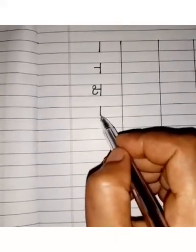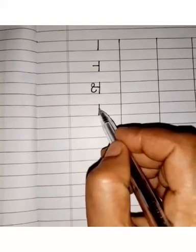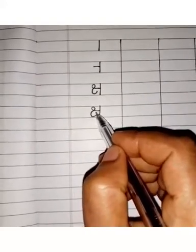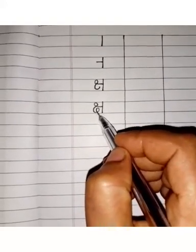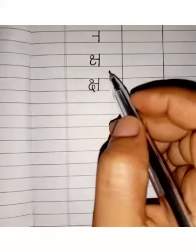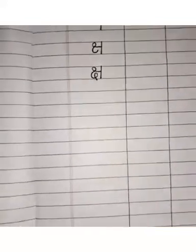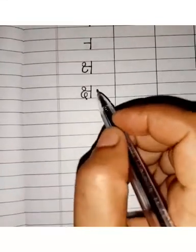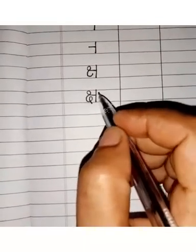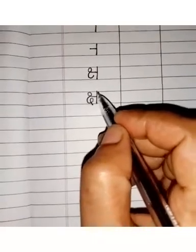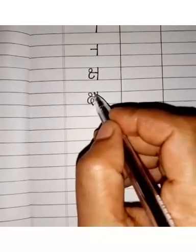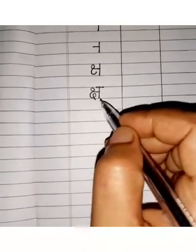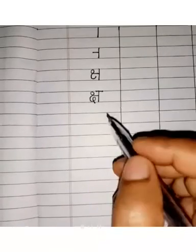After that, you have to write like this. And then you have to draw a slipping line on it.